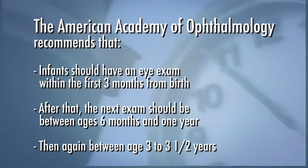When there are no particular problems, there are recommended intervals for eye examinations. The American Academy of Ophthalmology recommends that infants should have an eye exam within the first three months from birth. After that, the next exam should be between ages six months and one year, and then again between ages three to three and a half years. For children, eye exams can be given by ophthalmologists, pediatricians, family physicians, nurse practitioners, or physician assistants.